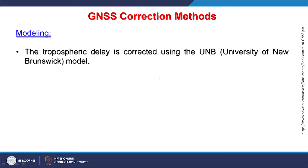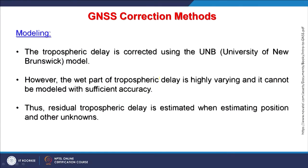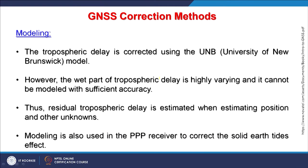There are of course tropospheric and ionospheric delays to address. Tropospheric delay is corrected using the UNB — University of New Brunswick — model. However, the wet part of tropospheric delay where moisture is high, because of clouds, is highly varying and cannot be modeled with sufficient accuracy, so some inaccuracy will remain. This residual tropospheric delay caused by the wet part can be estimated when estimating position and other unknowns. Modeling is also used in PPP receivers to correct the solid earth tides effect.